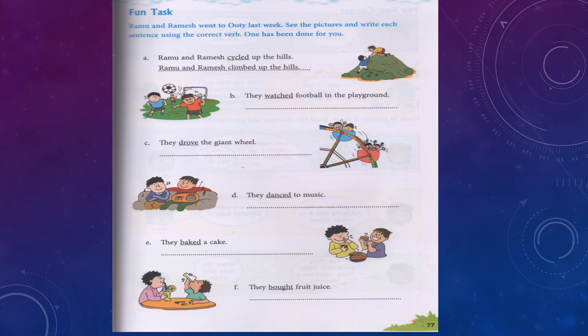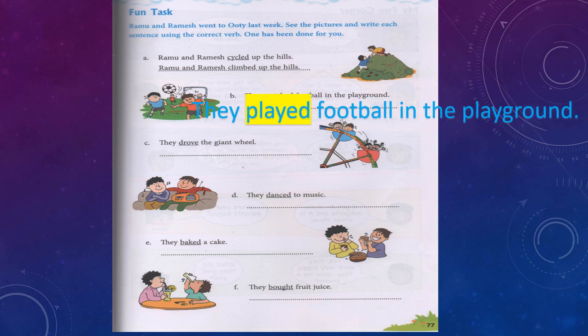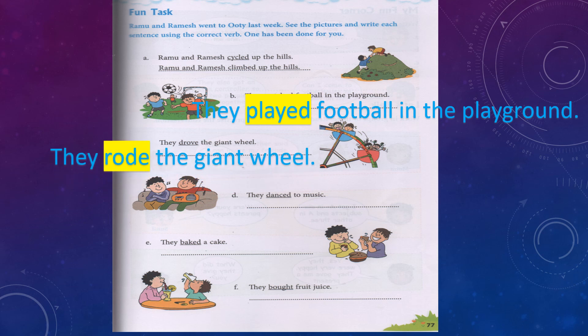Ramu and Ramesh went to Ooty last week. See the pictures and write each sentence using the correct verb. One has been done for you. Ramu and Ramesh cycled up the hills. Ramu and Ramesh climbed up the hill. They watched football in the playground. They played football in the playground. They drove the giant wheel. They rode the giant wheel.